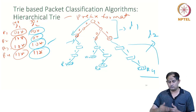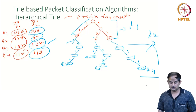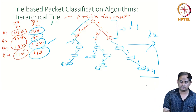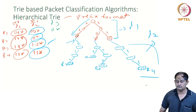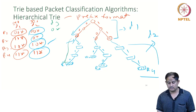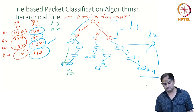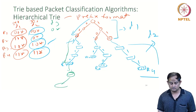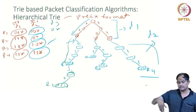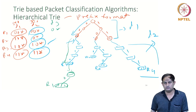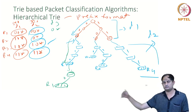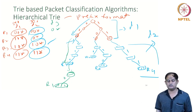Like this I can extend to any number of dimensions. If I have a third dimension D3 in prefix format, say 0*, I go back to rule R1: 00* is taken care, another 00* is taken care, and I add a no-cost link to the third level. With 0*, I go here and this becomes your rule number R1 node. For any number of fields inside your rules, the hierarchy proceeds from D1 to D2 to D3 in order. This kind of structure is called the hierarchical trie.